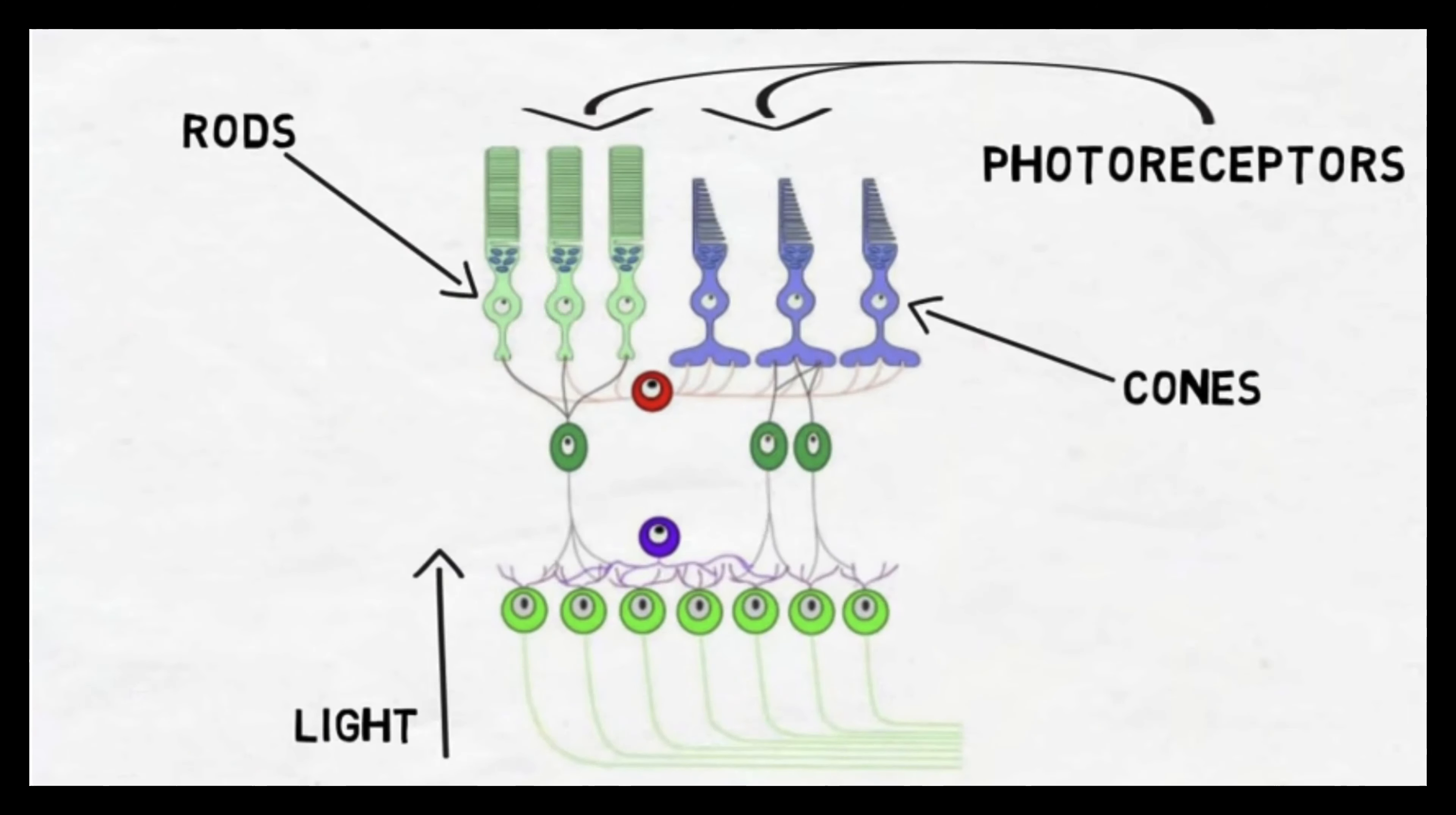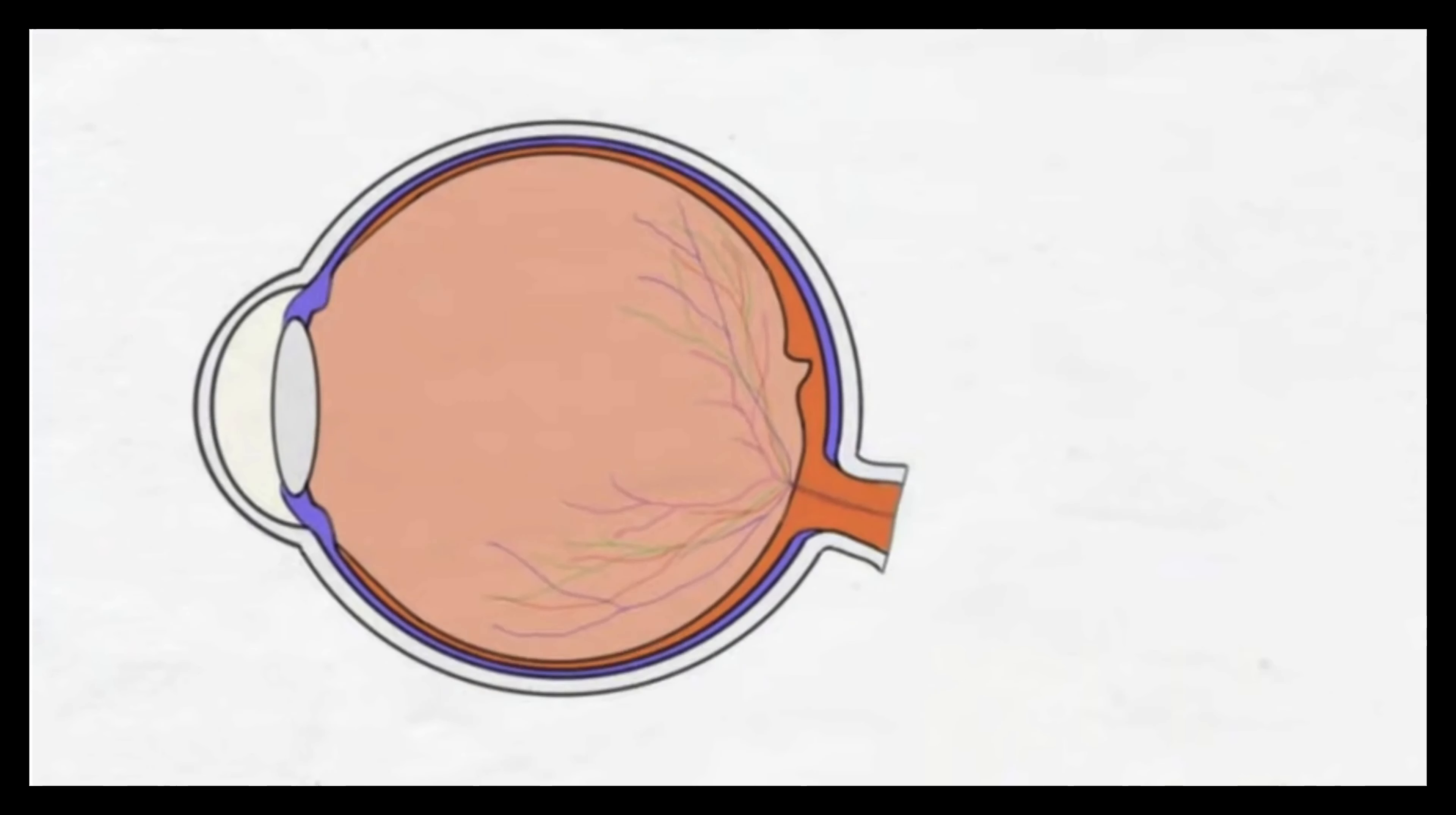Rods allow us to see in dim light but don't allow for the perception of color. Cones, on the other hand, allow us to perceive color under normal lighting conditions. Throughout most of the retina, rods outnumber cones.